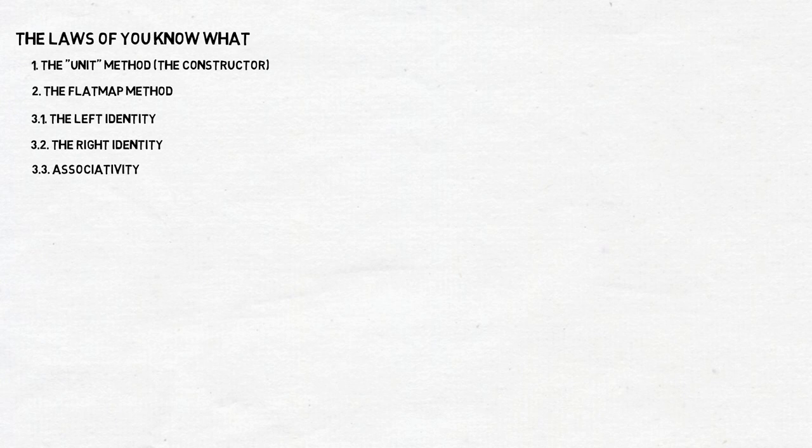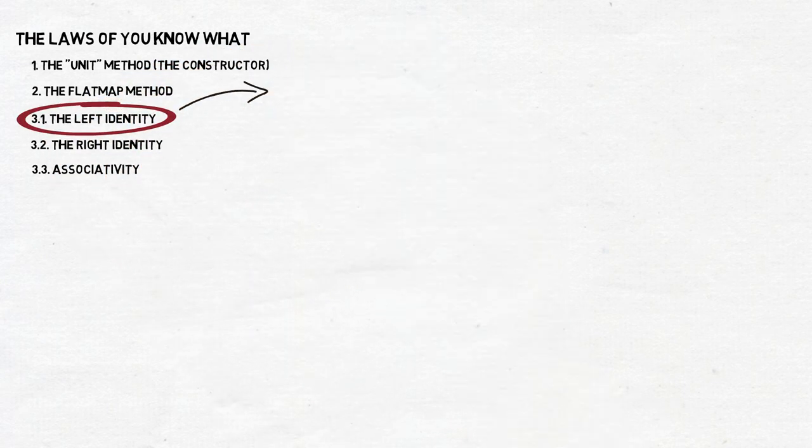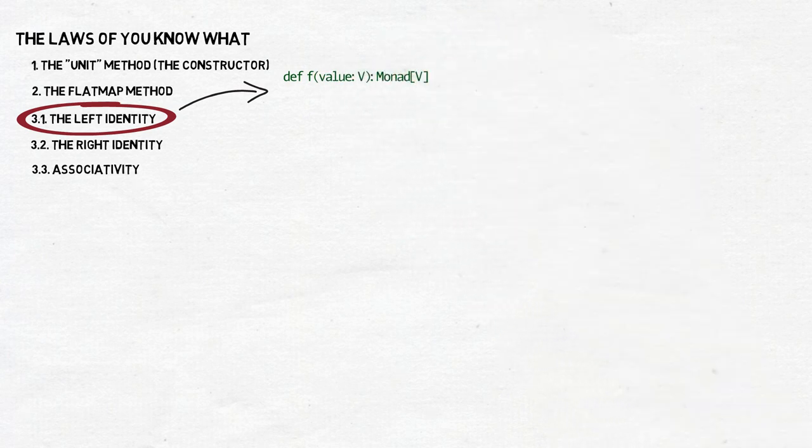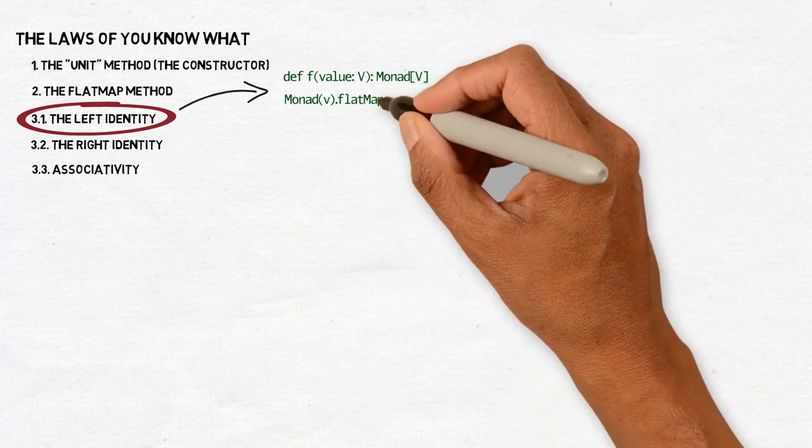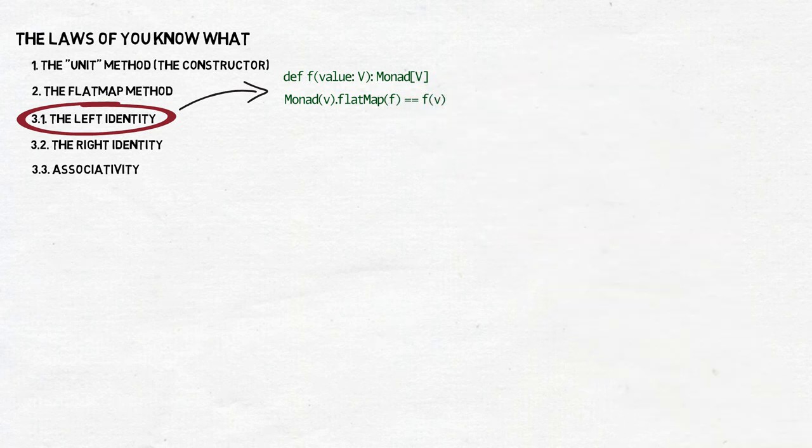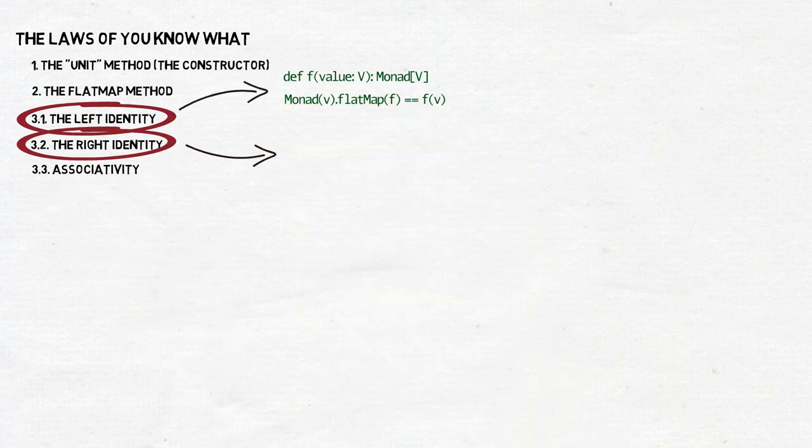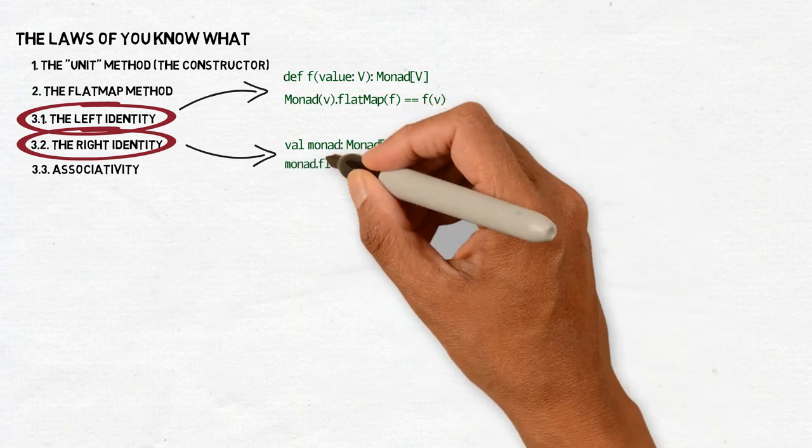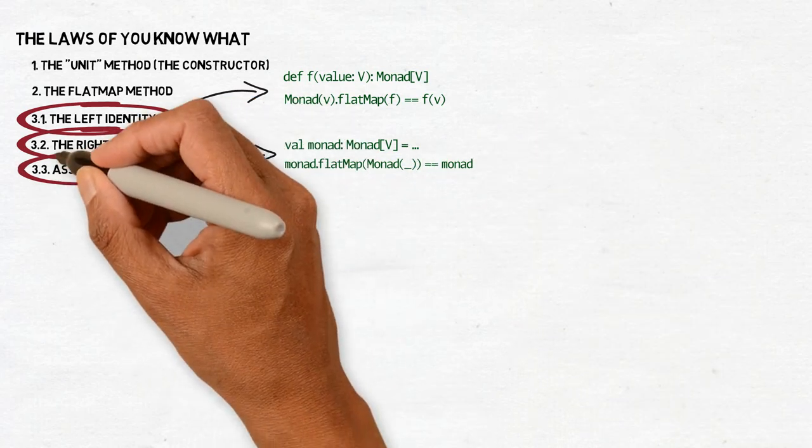First two are fairly trivial. They are concerned with the unit method, that is, the smart constructors with which we create monads. Say, we have a function f which takes a value and returns a monad of another value. The left identity law says that if we use the unit method to create a monad with a value and then flatmap it with f, then the result should be the same as if we just called f with that value. The right identity law says that if we have a monad and flatmap it with the unit method, then the result should be as if we didn't do it. The third law, the law of associativity, is a bit more complicated. Basically, it says that it should be possible to unnest every nested flatmap of a monad.